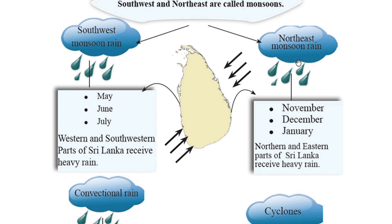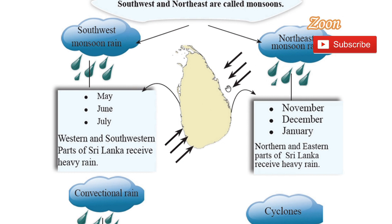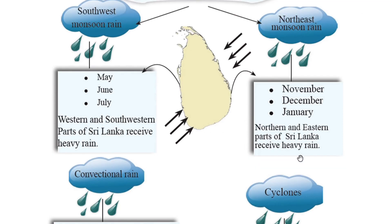The other type is the north east monsoon rain. These winds are blowing into the country from the north east. This north east monsoon rain can be seen during the three months of November, December, and January. The northern and eastern parts of Sri Lanka receive heavy rain from the north east monsoon.